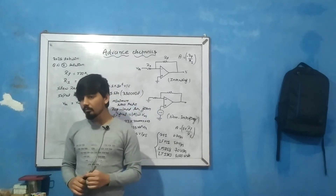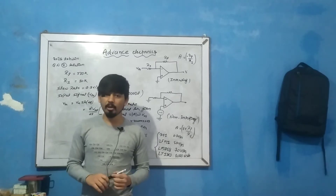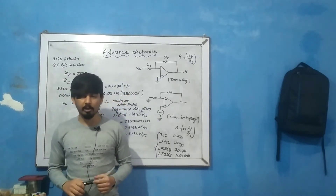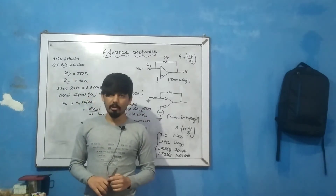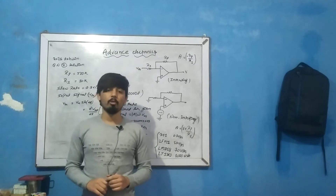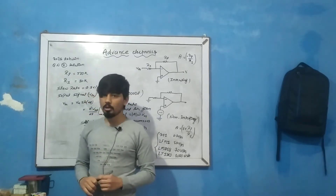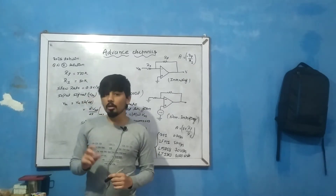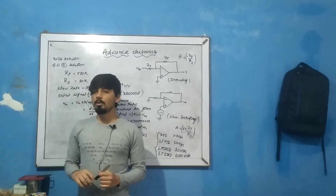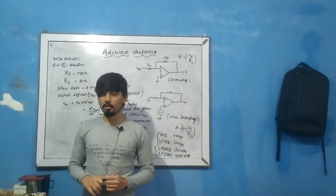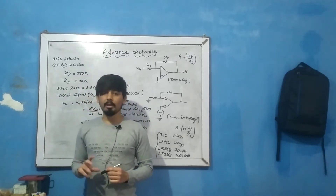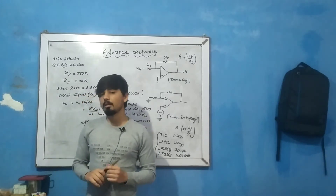Now, what is the cause of slew rate limiting? The main cause is the internal compensation circuit of the op-amp. At high frequencies, the op-amp requires stability, so it has an internal compensation capacitor. This capacitor is the main cause of slew rate limitation because of its charging and discharging time and the limited driving current available.